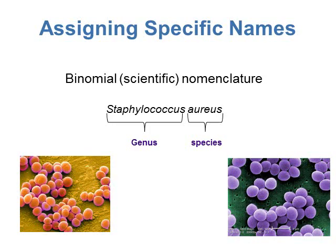Another example is humans — we're Homo sapiens. Our genus is Homo and the species is sapiens. When written out, Homo is capitalized and the full name Homo sapiens is in italics. That's the binomial or scientific name.